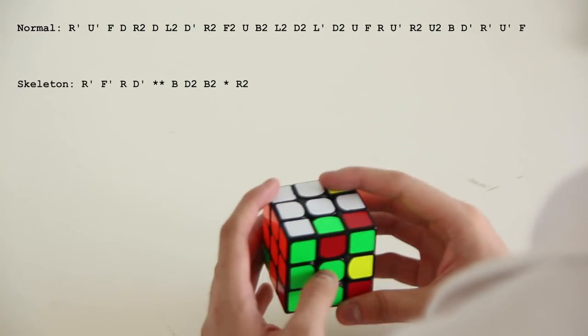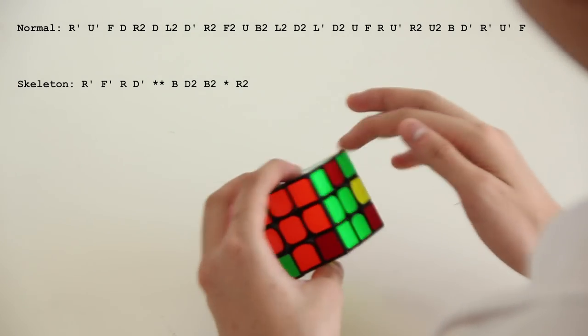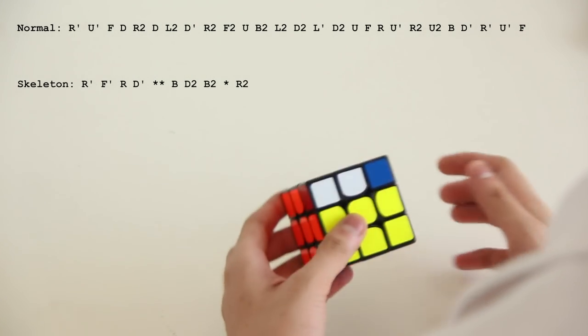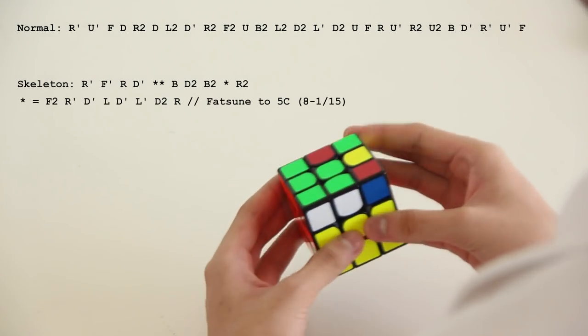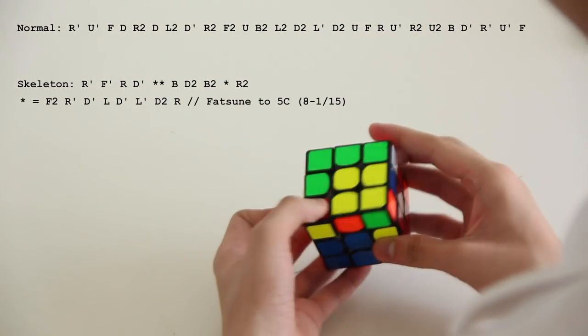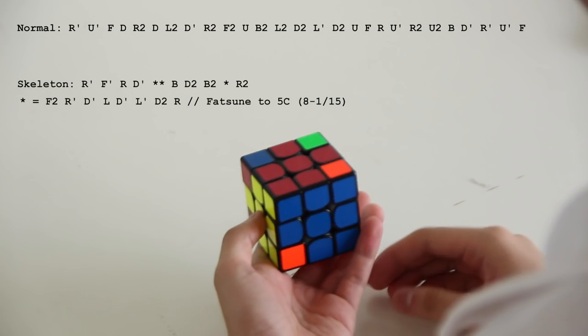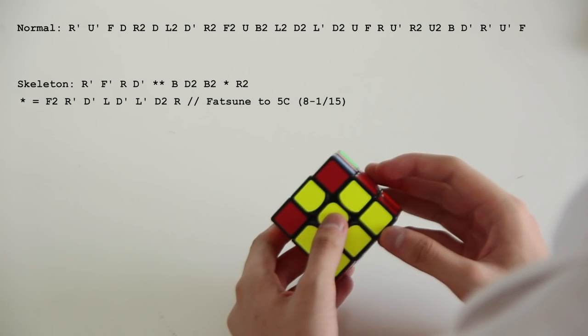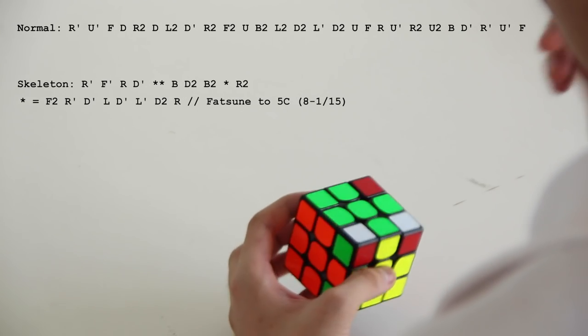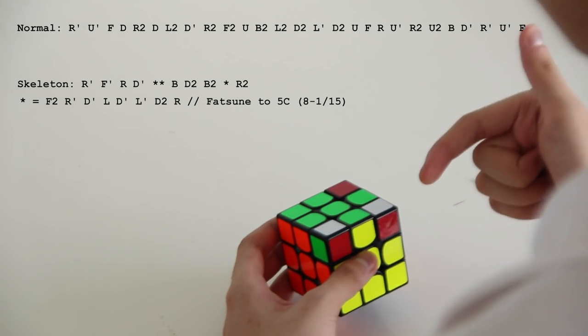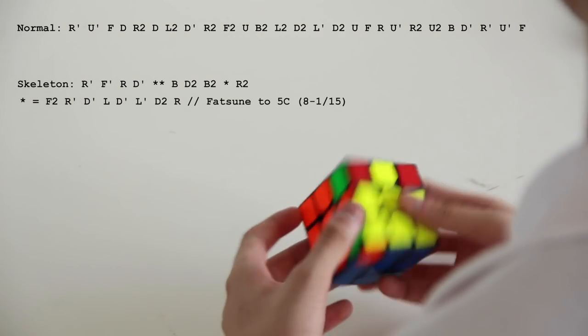So at one point in the skeleton, there's a spot where all of the edges are on top, and just by doing F2 and then fat soon like that, it gives 5 corners, and that's 8 moves minus 1 cancelled, so this is 15 to 5 corners.